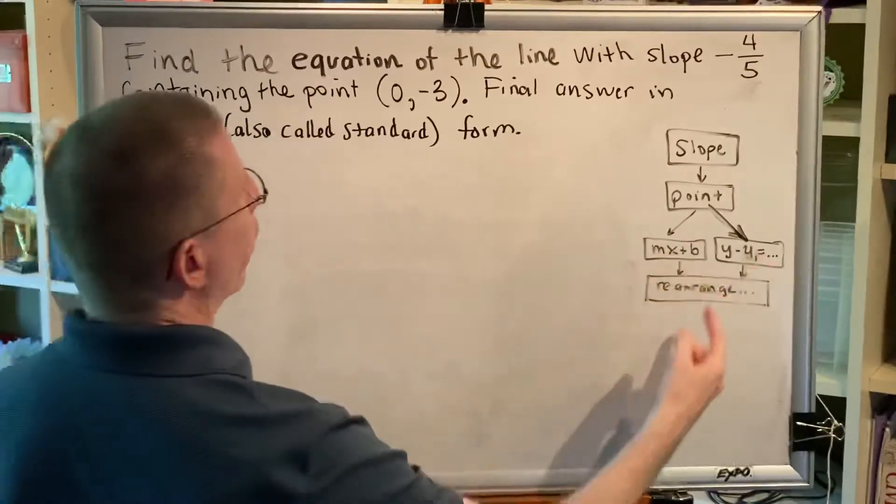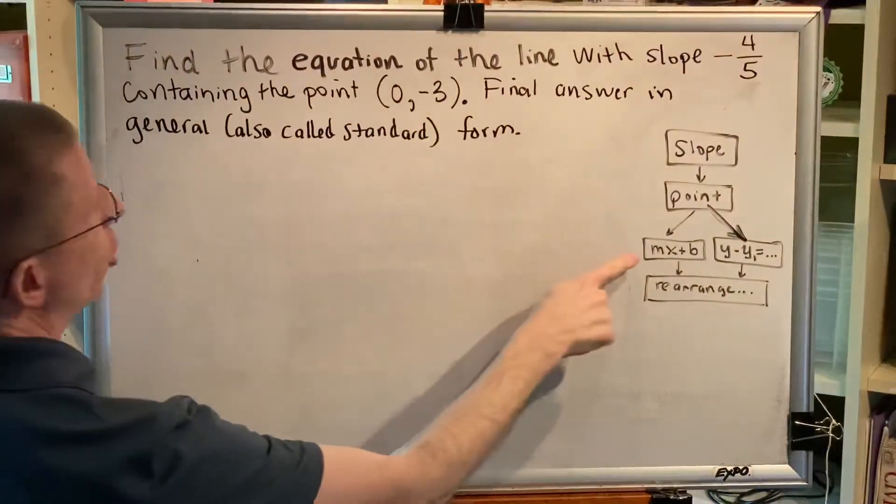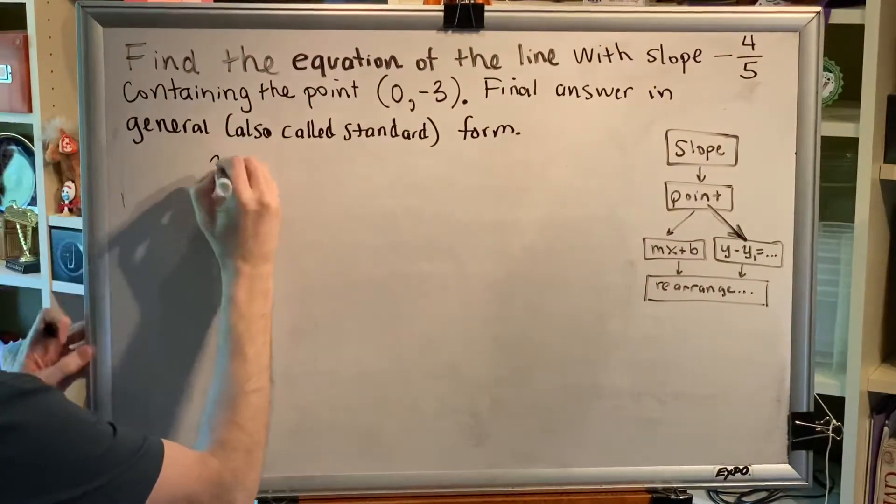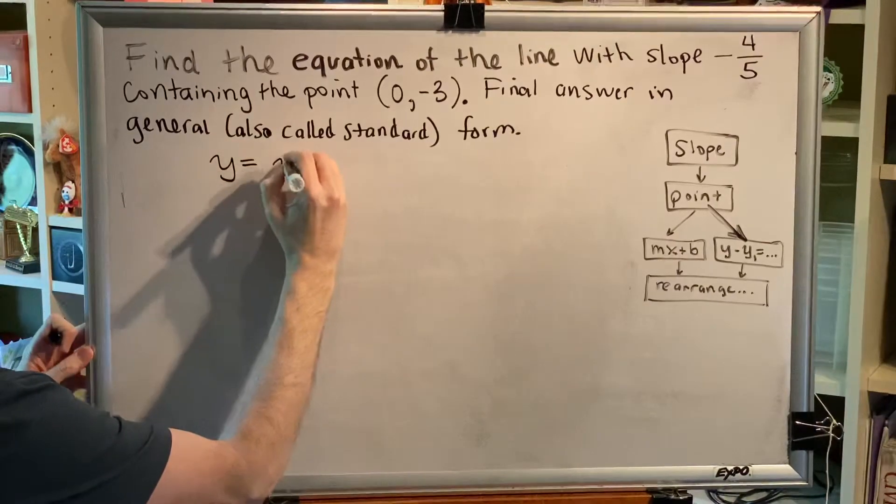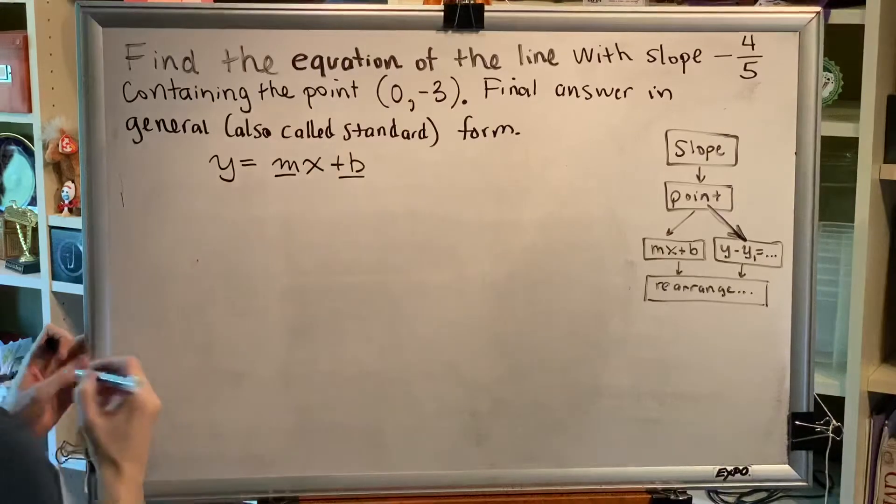Now pick a path. Left path, if the x-coordinate of your point is zero, which it is, so we'll go this way. The equation of our line will be written as y equals mx plus b. We just have to replace the m and the b with numbers.